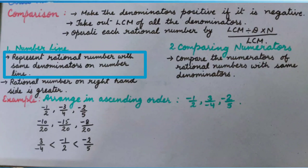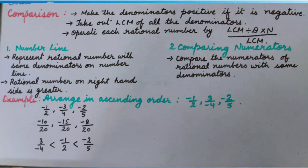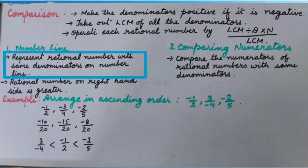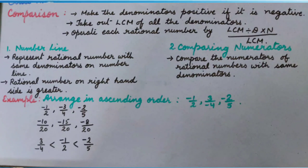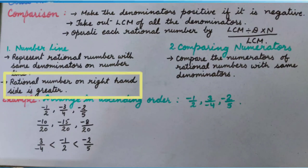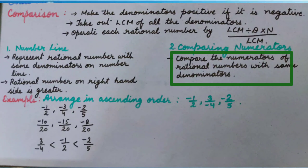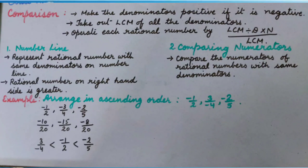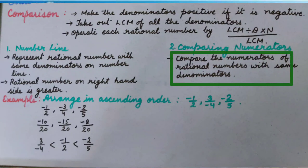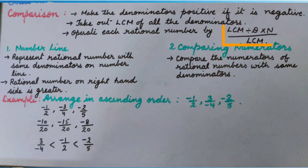For the number line method, we will represent the rational numbers with the same denominators on the number line. After that, we will compare — if a rational number is on the right-hand side, it is greater than the rational number on the left-hand side. We will compare the numerators of all the equivalent rational numbers, and whatever arrangement is asked, we will arrange accordingly.